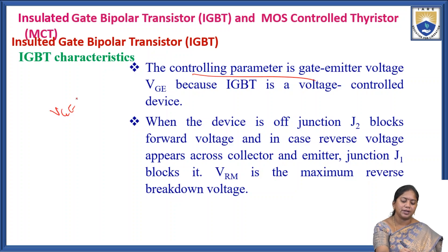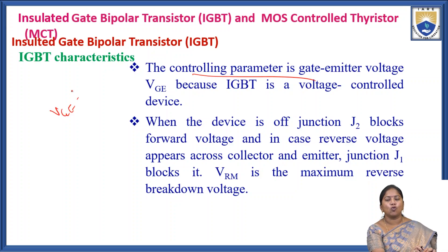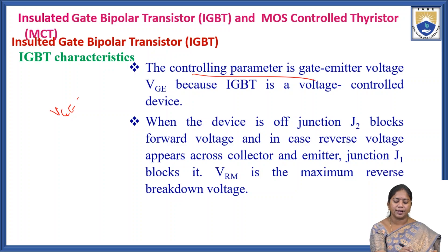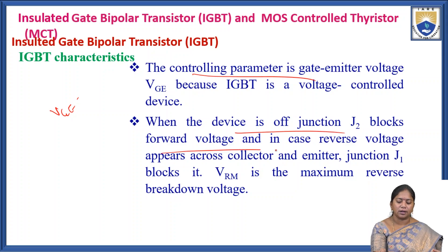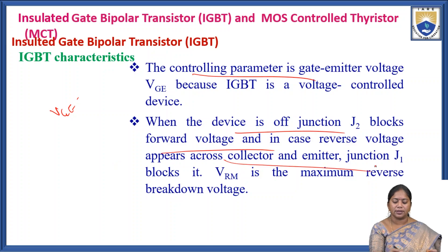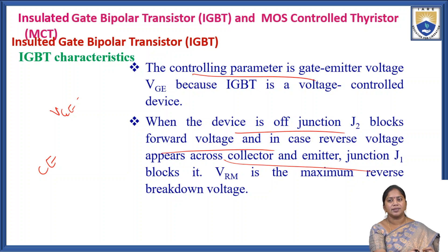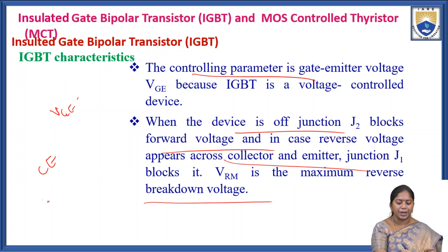The controlling parameter is the gate-emitter voltage because the IGBT is a voltage-controlled device. When the device is off, junction J2 blocks the forward voltage. In the case of reverse voltage across the collector-emitter, junction J1 blocks it. VRM is the maximum reverse breakdown voltage.